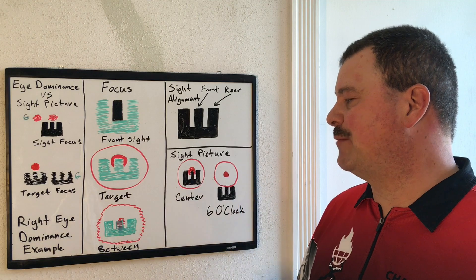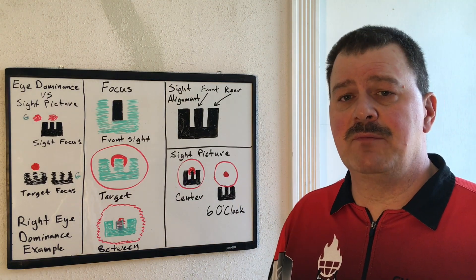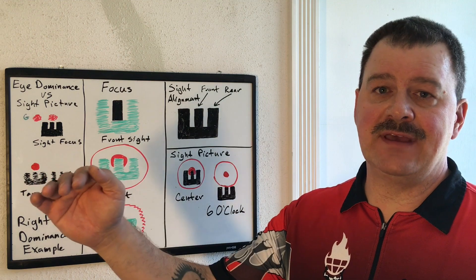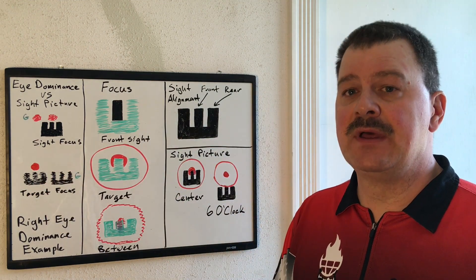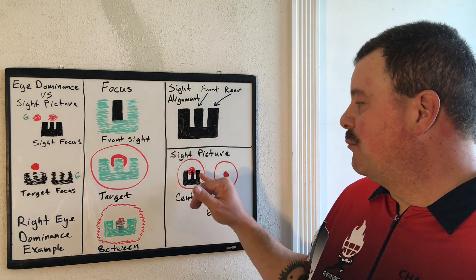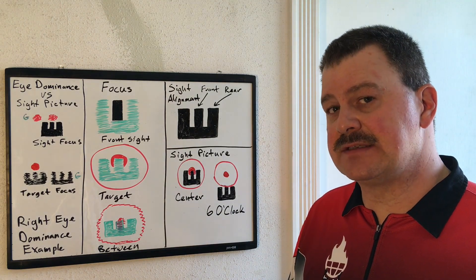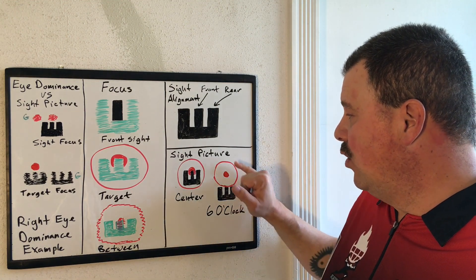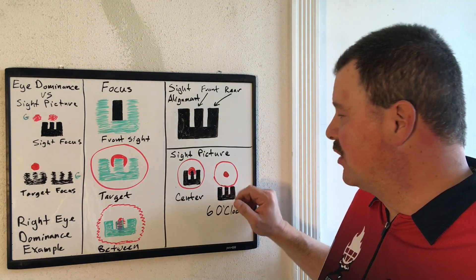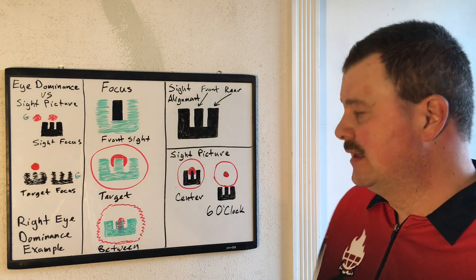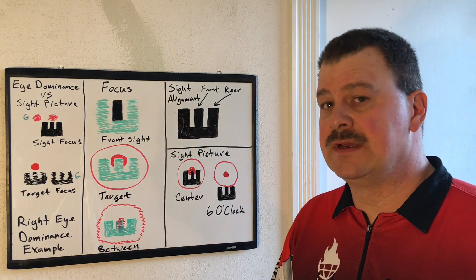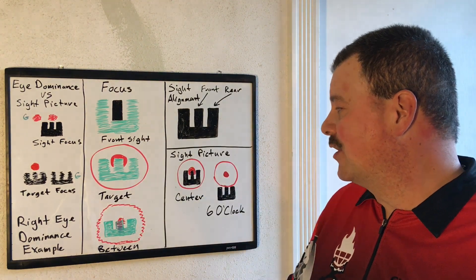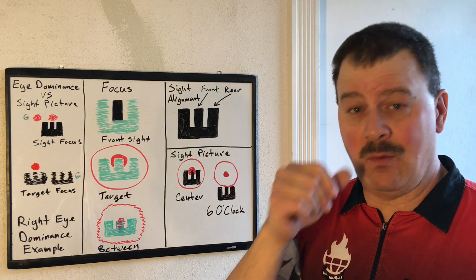There are two common sight picture examples that people like to sight in their guns. There's always going to be an offset between the point of aim versus the point of impact, and that is usually a preference. Personally, I like to have a center point of aim versus point of impact for my iron-sighted guns at 10 yards. Another example is a six o'clock hold, meaning that you can see the whole target above your aligned sights, but your point of impact is still going to be the center of that target. Which one you want to use is up to you — it's user preference. Personally, I like a center sight picture because I like to put my sights exactly where I want things to hit.